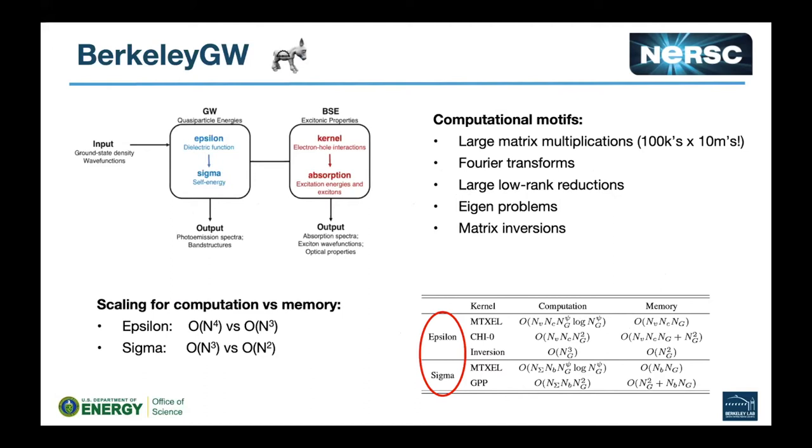A bit about Berkeley GW. There are four different modules in Berkeley GW: Epsilon, Sigma, Kernel, and Absorption. If you compile Berkeley GW you'll get four different executables, and these executables can be run in lockstep. So the output of Epsilon can be fed into Sigma to calculate the self-energy, and then the output of Sigma can be fed into Kernel to calculate something else.